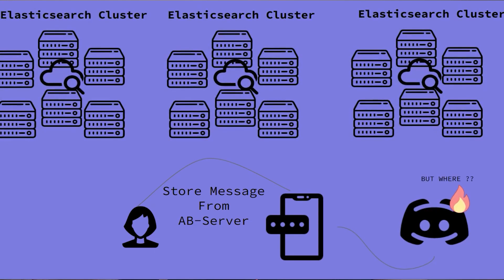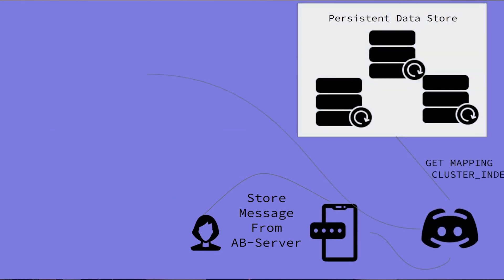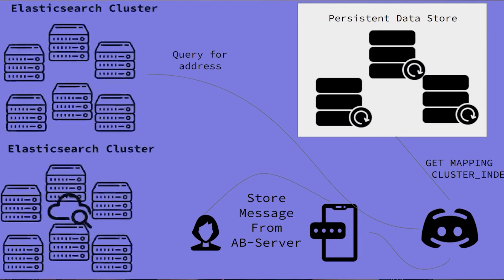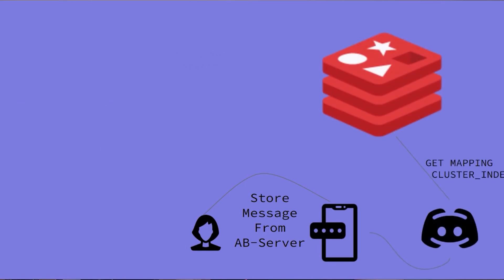To decide which cluster and index a message goes to, Discord creates a mapping called a 'shard' — don't confuse this with the Elasticsearch internal shard, which we'll discuss later. Any incoming message must be mapped to a particular cluster and some indexes in that cluster. This mapping is stored in Cassandra, but fetching it every time is slow, so they also cache it in Redis.